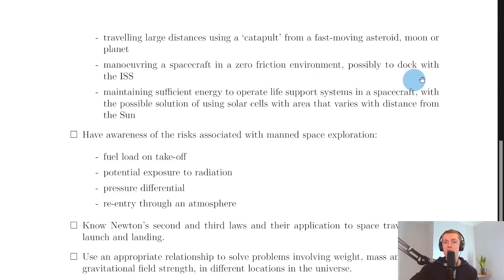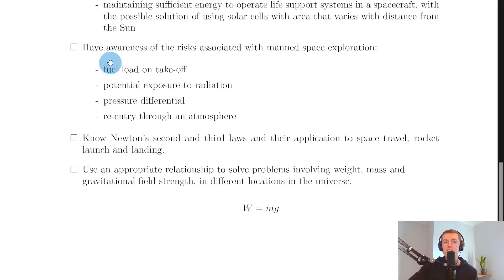We also have maneuvering a spacecraft in a zero friction environment, possibly to dock with the ISS—so that's two challenges: maneuvering in space and docking. The last challenge mentioned here is maintaining sufficient energy to operate life support systems in a spacecraft, with the possible solution of using solar cells with area that varies with distance from the sun. That's just getting to the idea of how do we produce electricity—well, we can do it with solar cells on solar panels. And we're just saying here that the greater the distance of the spacecraft away from the sun, then the bigger the solar panels would have to be to generate electricity.